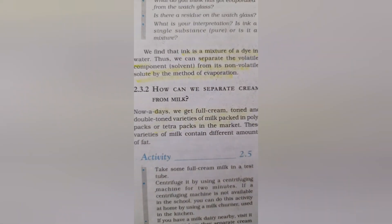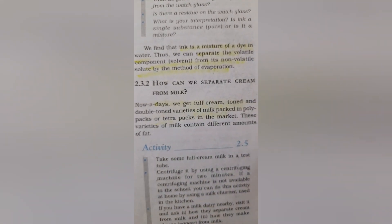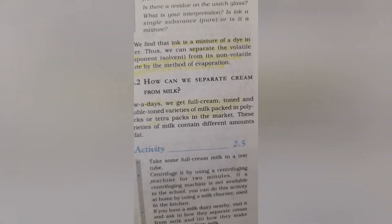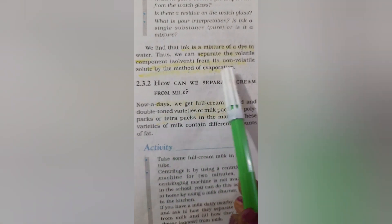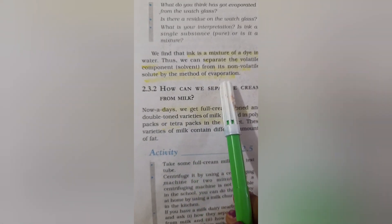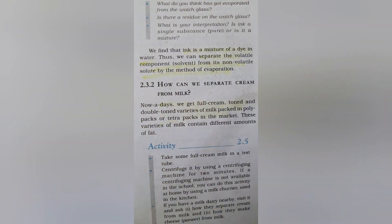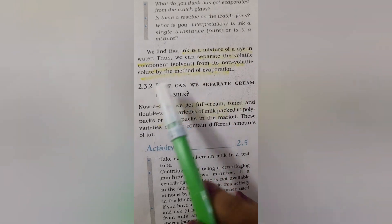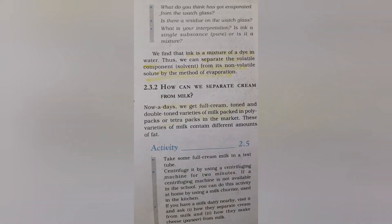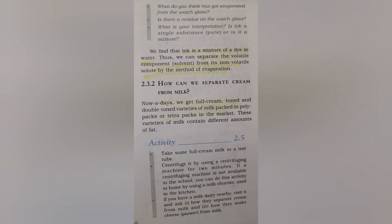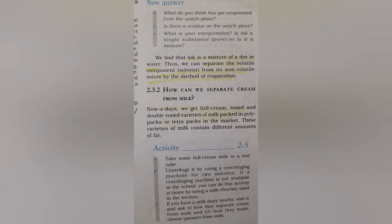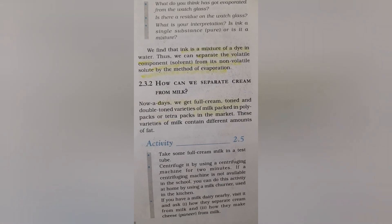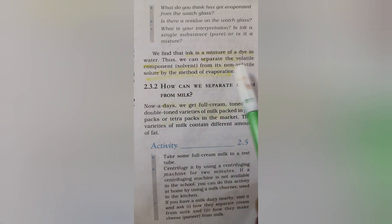Ink is a mixture of dye in water. We can separate the volatile component — that is, the solvent — from its non-volatile solute by the method of evaporation. 'Volatile' means easily changing into vapor. So evaporation separates an easily vaporizable solvent from a non-volatile solute. If both were volatile, both would vaporize and you would not be able to separate them. Here, the solute is non-volatile and the solvent is volatile.